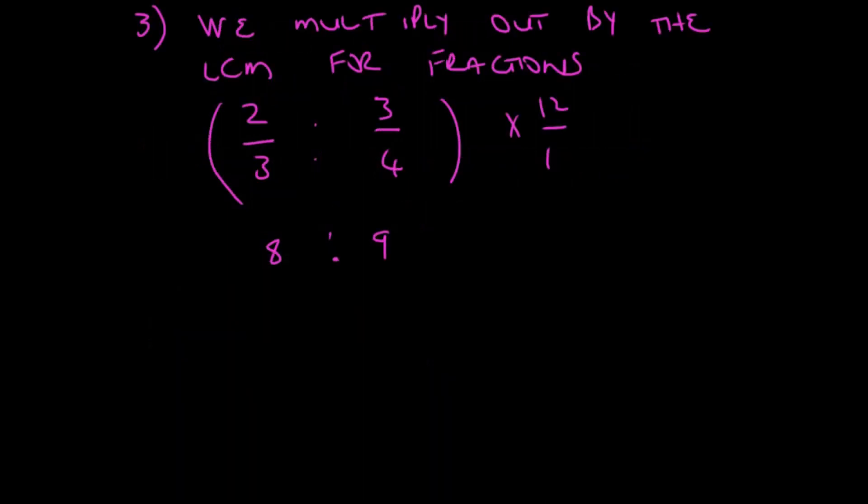The next thing we need to look at is that when we have fractions, we must multiply out by LCM. So, if I have 2 over 3 as to 3 over 4, I need to find my LCM. My LCM is 12. And what does that give me? It gives me 8 over 12 as to 9 over 12.